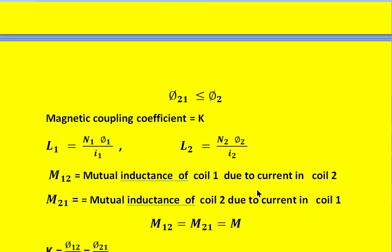Whenever there is a magnetic coupling between the coils, there exists a mutual inductance between them. M12 is the mutual inductance of coil 1 due to the current flowing in coil 2. Similarly, M21 is the mutual inductance of coil 2 due to the current flowing in coil 1. Because these two coils are close to each other, M12 is equal to M21, and both are equal to M.